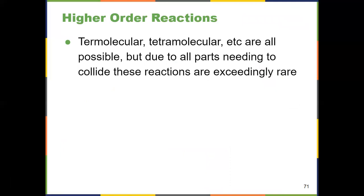There are other examples with more molecules — termolecular (three molecules), tetramolecular (four molecules), et cetera — but those are much less common. With a bimolecular reaction we need two molecules to come together per collision theory: they have to collide, have the right orientation, and have the proper energy. Termolecular or tetramolecular reactions would require three or four of those things to happen all at the same time — like three people throwing basketballs and trying to get all three to collide exactly at the same time. It's very hard, so those aren't common and won't be tested in this course.